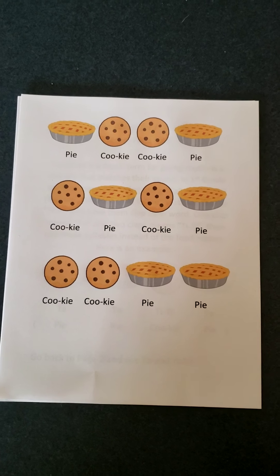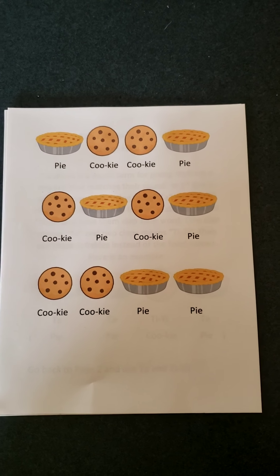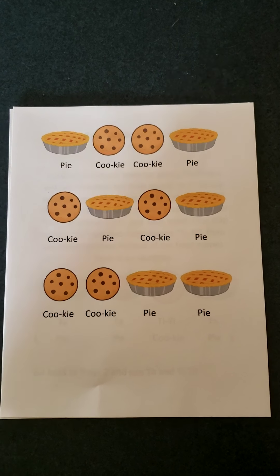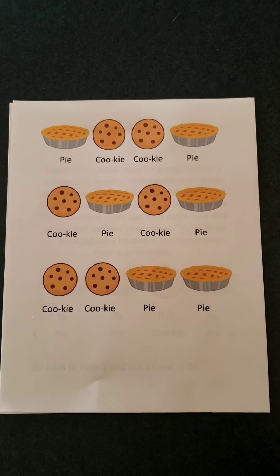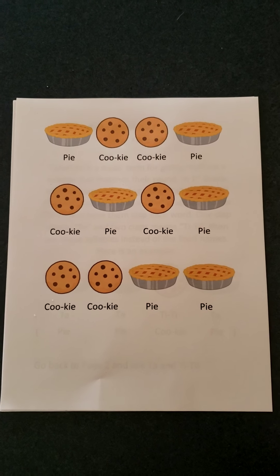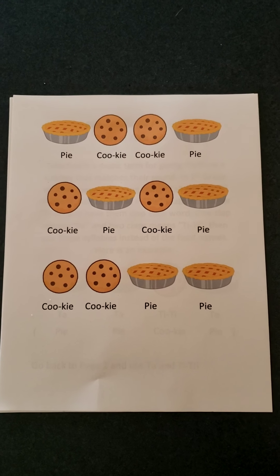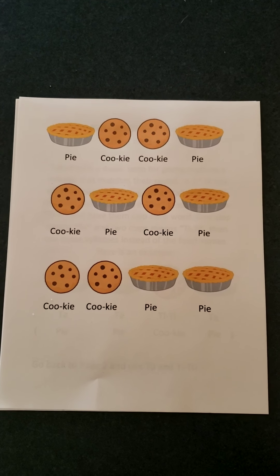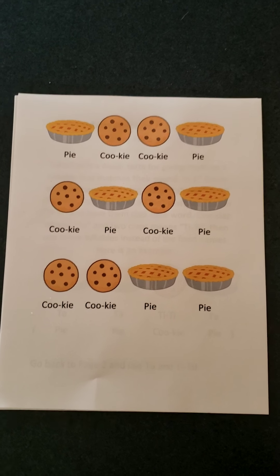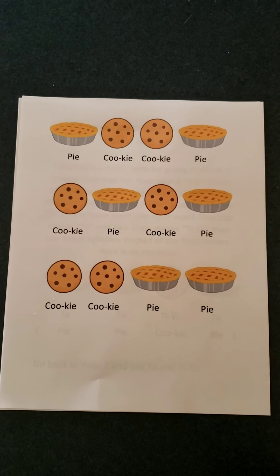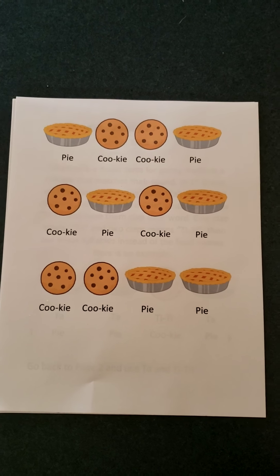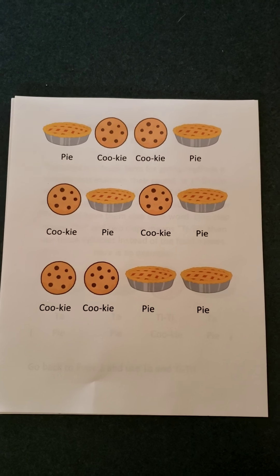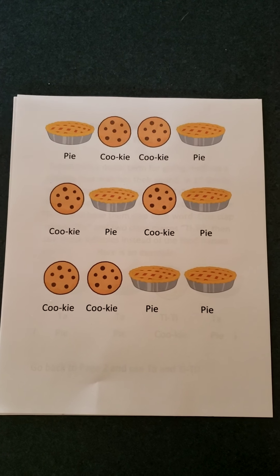In pre-K, kindergarten, and first grade, we can read rhythms using pictures. Start with a steady beat. One, two, steady beat. Now read the words under each picture. Read the first one. Ready, go. Pie, cookie, cookie pie. Try by yourself. Ready, go.